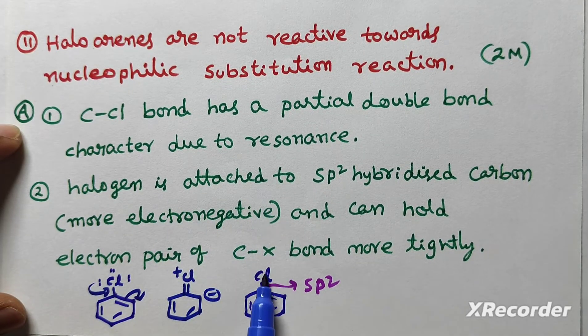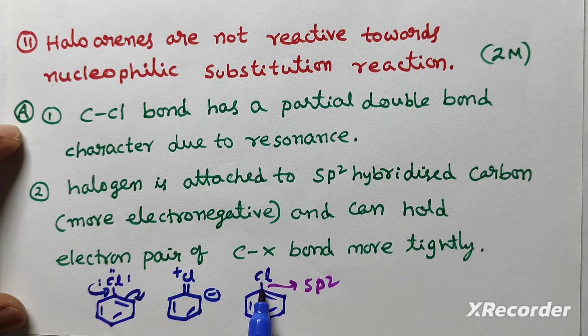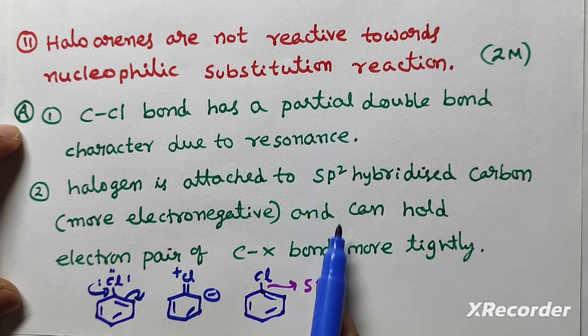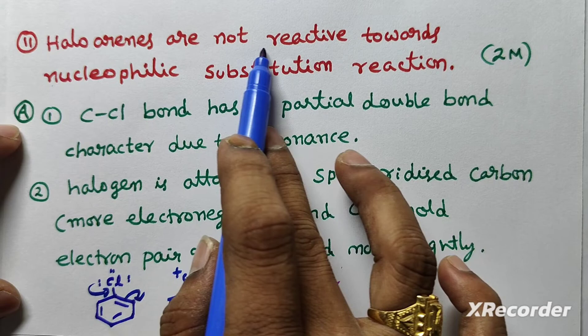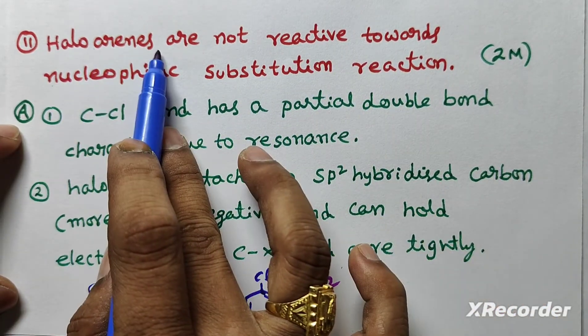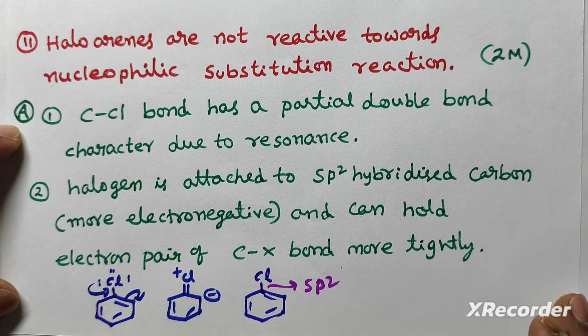Halogen is attached to SP2 hybridized carbon which is more electronegative and can hold electron pair of C-X bond more tightly. These are the two reasons. Halobenzenes are not reactive towards nucleophilic substitution reactions. Or halobenzenes are less reactive than haloalkanes.